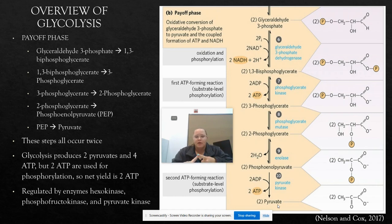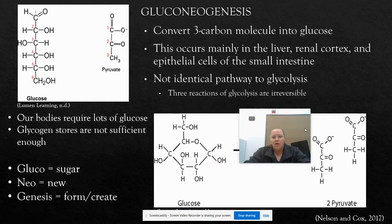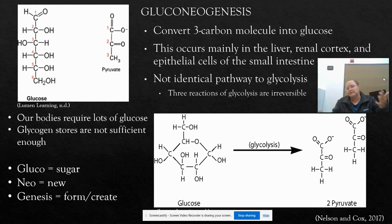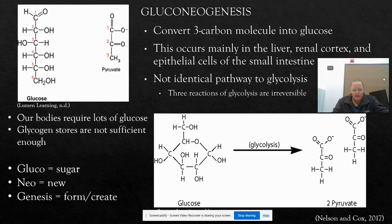Glycolysis is regulated by the enzymes hexokinase, phosphofructokinase 1, and pyruvate kinase. Moving on to gluconeogenesis — our bodies require a lot of glucose, some of which is stored as glycogen in the liver and muscles, but these stores are not as sufficient as you might think. Whether maintaining homeostasis between meals, fasting, or recovering from intense exercise, we run through glycogen stores quickly. That is why we need gluconeogenesis — 'gluco' means sugar, 'neo' means new, 'genesis' means to create — essentially the creation of a new sugar.